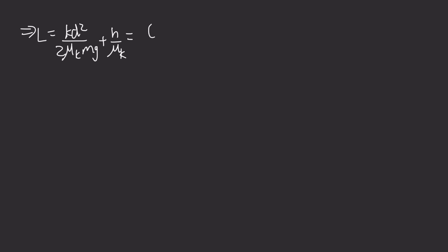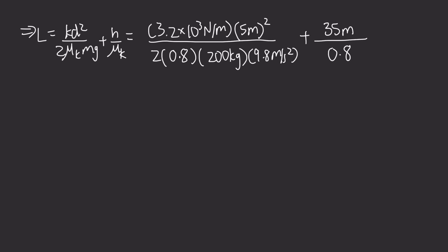After plugging everything in, we know that k is 3.2 times 10 to the third newtons per meter, the distance of the spring compression is 5 meters, we square that, we divide by the coefficient of friction which was 0.8, the mass was 200 kilograms, and of course we have 9.8 meters per second squared. Then the height was originally 35 meters, and again we get the coefficient of kinetic friction.